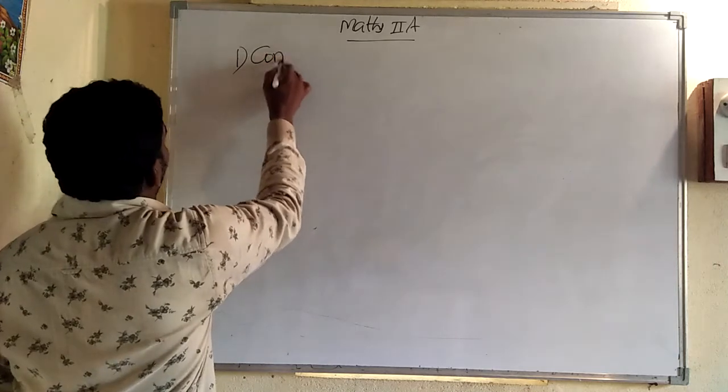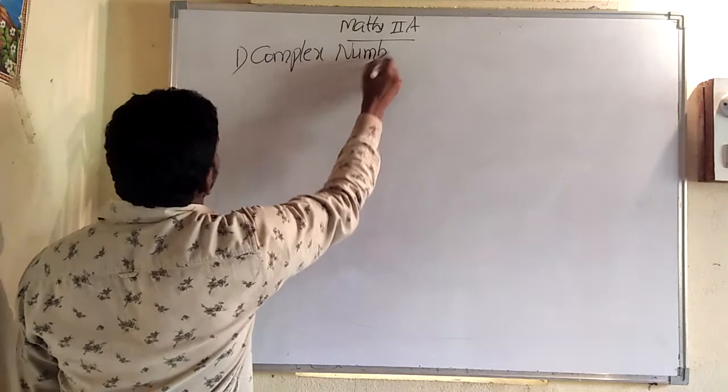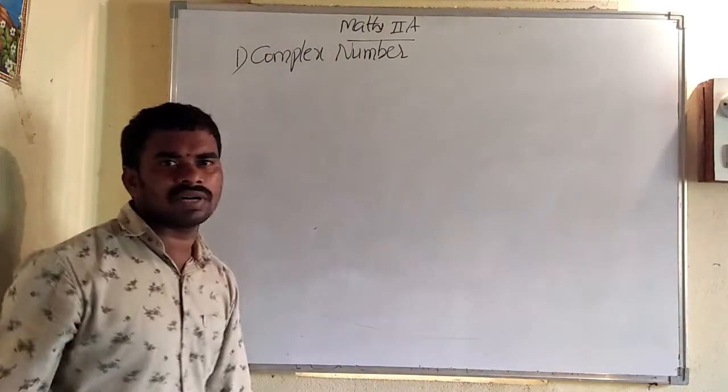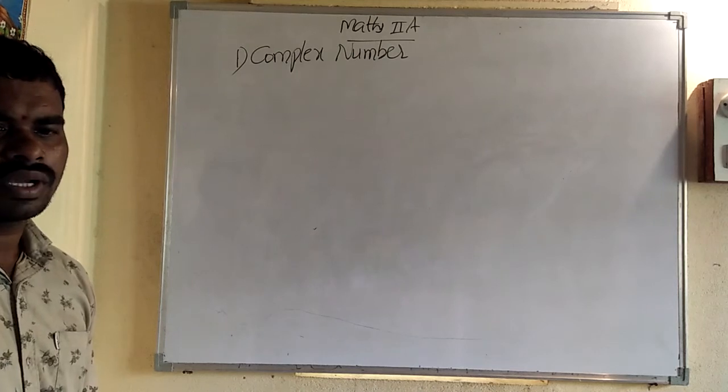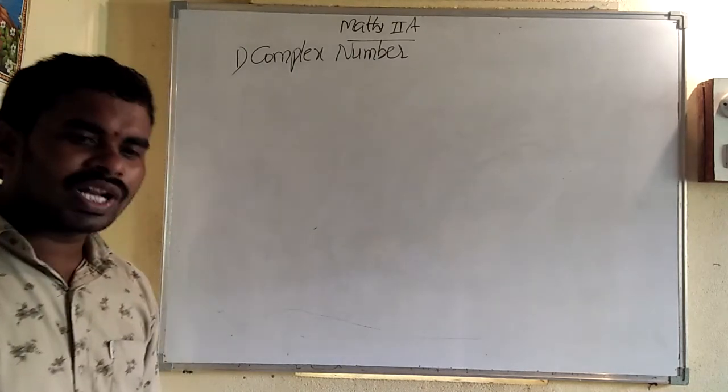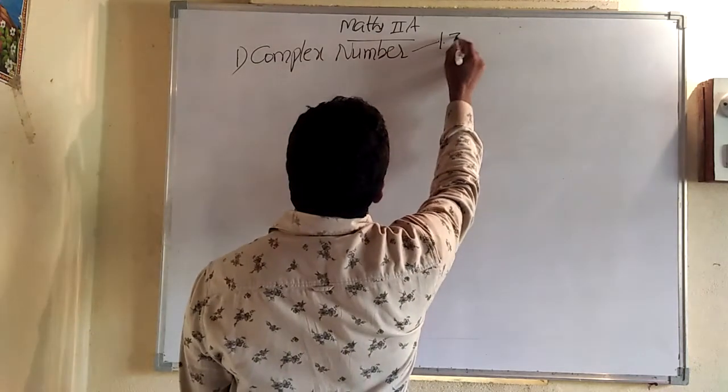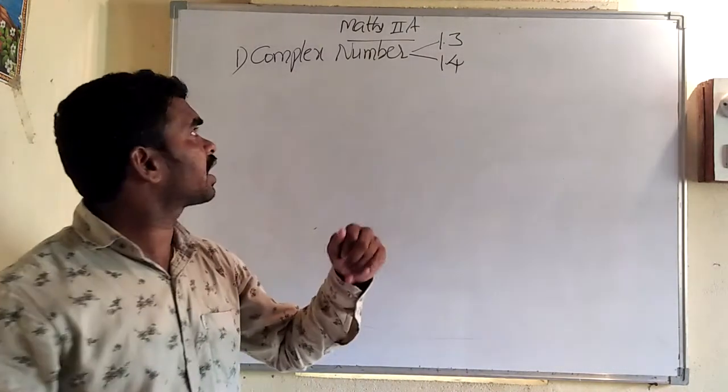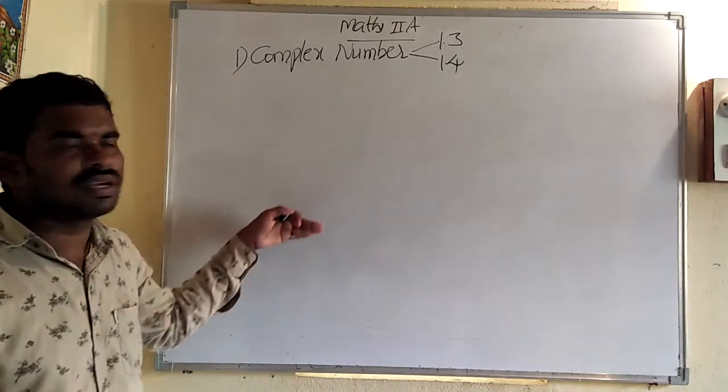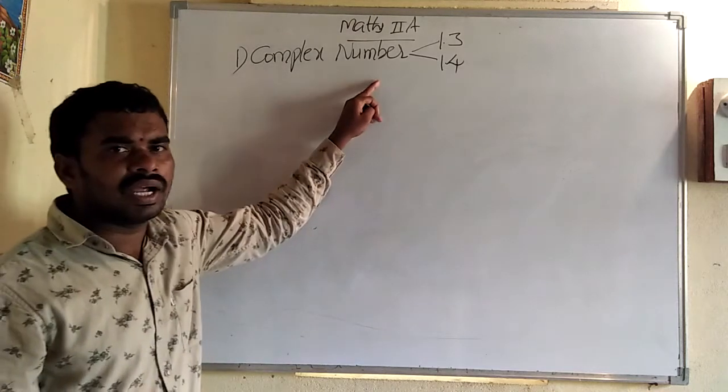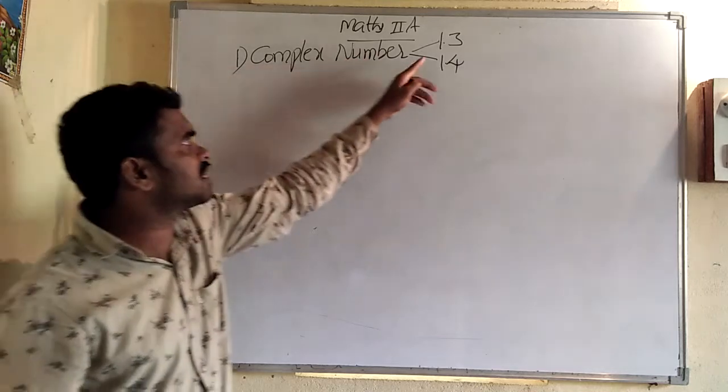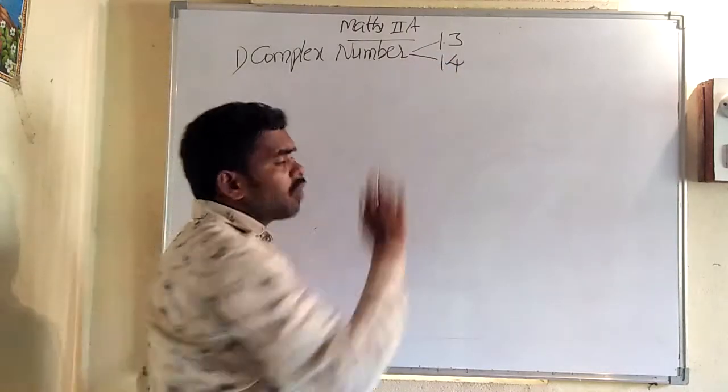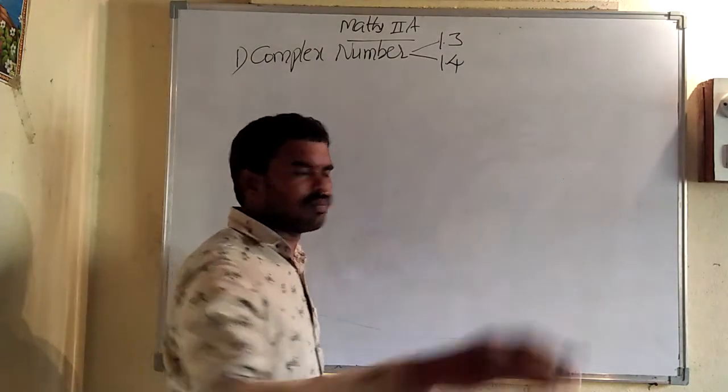First, let us see what are those 10 chapters and which are removed. In this second year, in a few chapters, the subtopics are removed. The first chapter is complex numbers. In this complex number, the removed syllabus is modulus amplitude form 1.3 and 1.4. Just open the textbook and check the index. In that, 1.3 and 1.4 are removed.